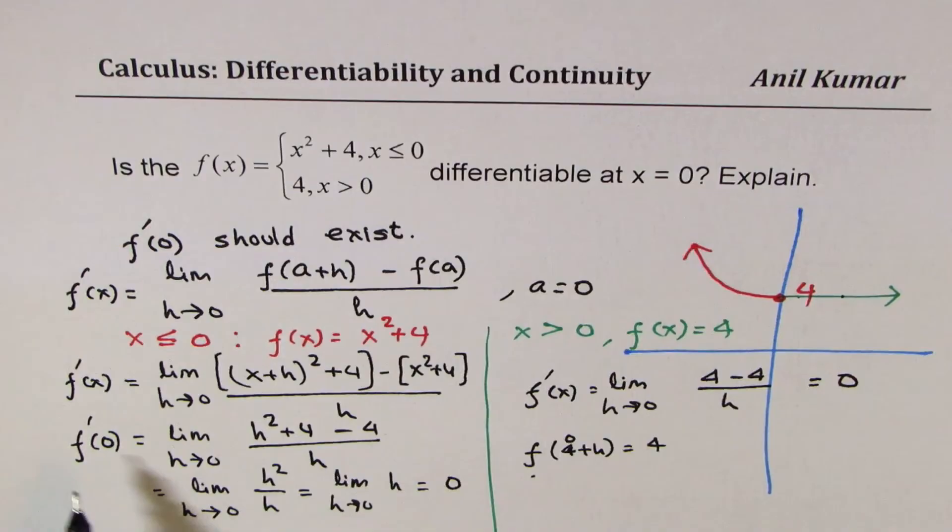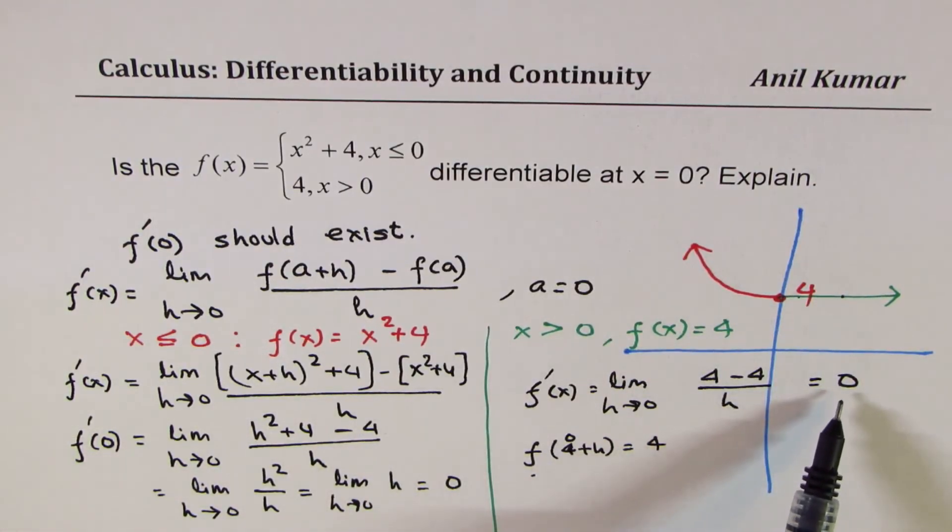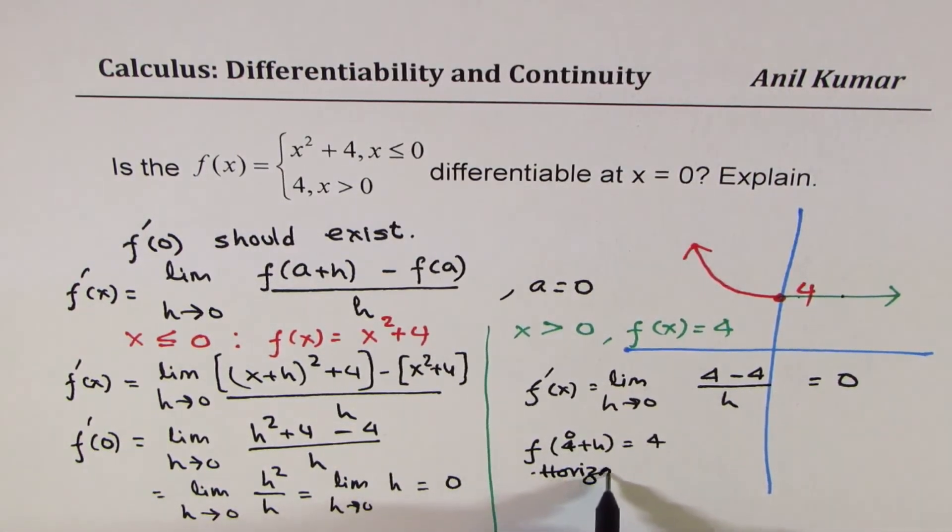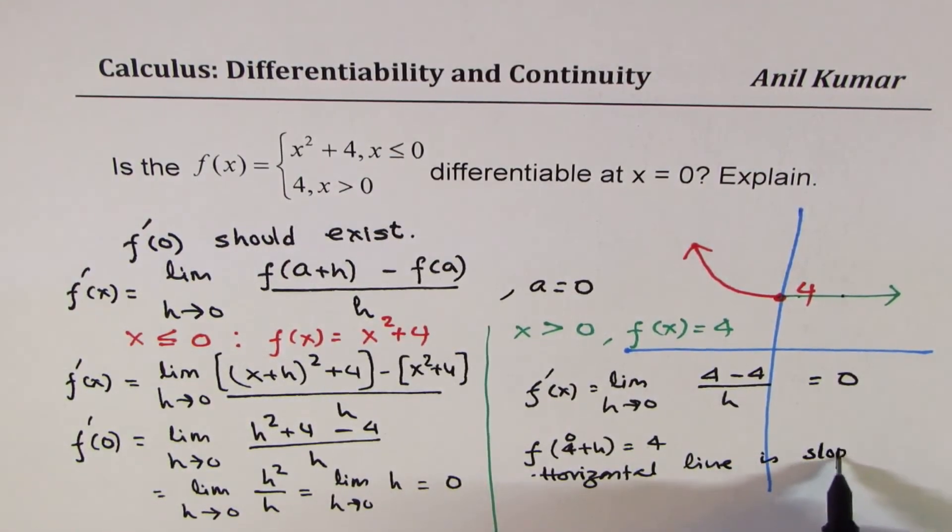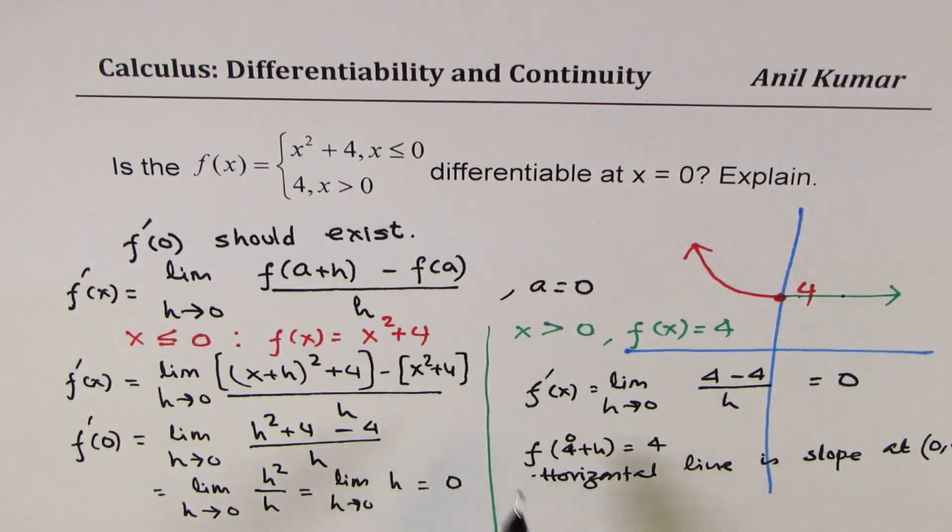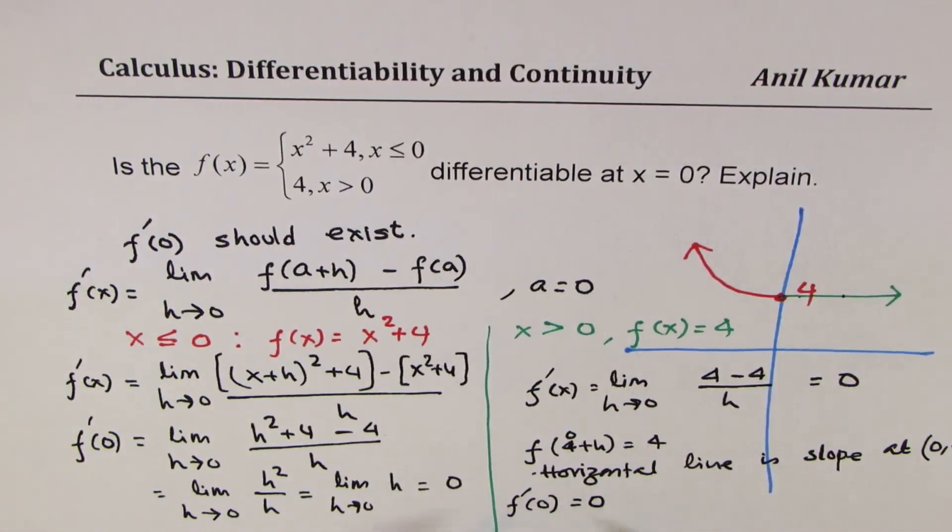Now, what we notice here is that both derivatives from both the sides are having the same slope. So horizontal line is the slope. So we see that the horizontal line is slope at the point (0, 4). So since we see that the derivative exists, since we know now that f'(0) is equal to 0, the function is differentiable.